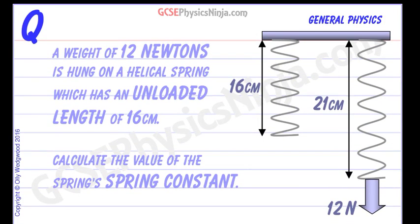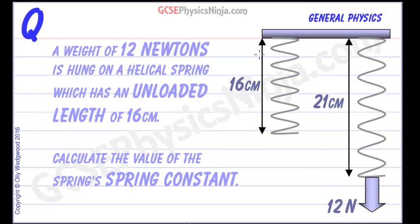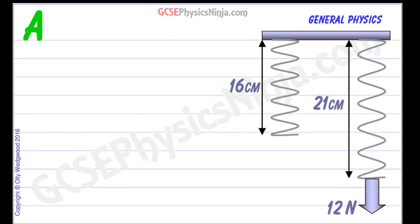So we've got an unloaded length of 16 cm and calculate the value of the spring's spring constant. In this situation here we're loading it with 12 newtons and it's got a new length of 21 cm. So let's get stuck into this calculation.